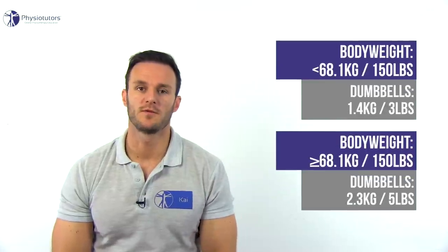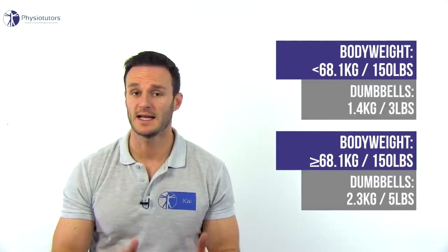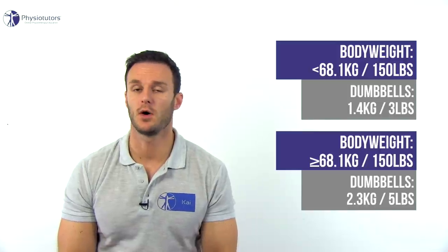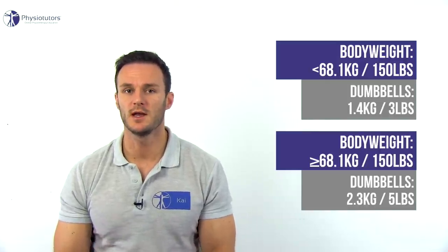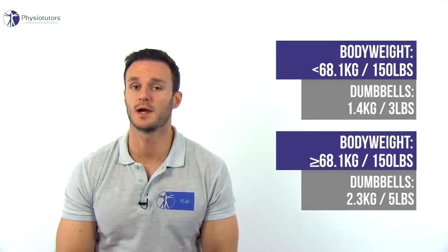To observe for scapular dyskinesis according to the method of McClure, give your patients two dumbbells of 1.4 kilograms or 3 pounds if they weigh less than 68.1 kilograms or 150 pounds, and 2.3 kilograms or 5 pounds for patients who weigh 68.1 kilograms or 150 pounds or more. These weights are used due to a study by Johnson et al. in 2001 that showed active movement with resistance resulted in abnormal scapular motion more often in those with shoulder injury.